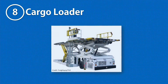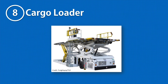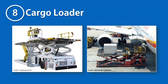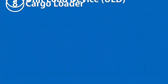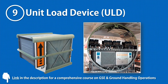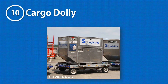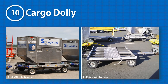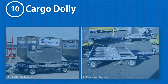A cargo loader is a heavy-duty ground support equipment used for loading cargo on wide-body aircrafts. A unit load device, or simply ULD, is a standardized container used for packaging cargo efficiently for easy transport and storage inside the aircraft's cargo compartment. Unit load devices are transported over what's called a cargo dolly, which is a non-motorized piece of ground support equipment towed by a towing tractor.